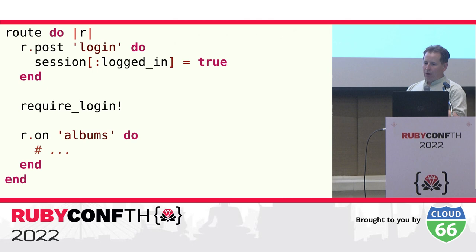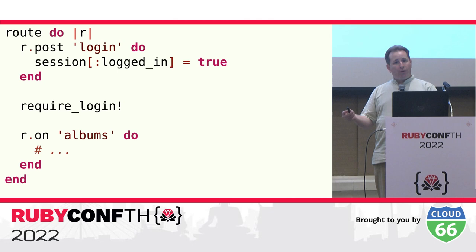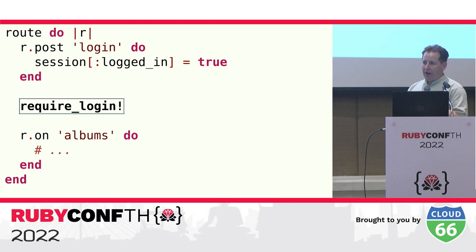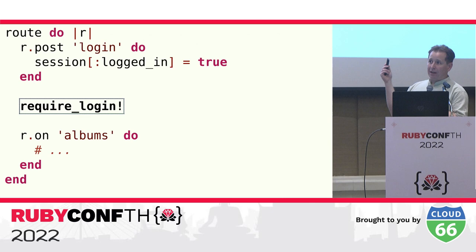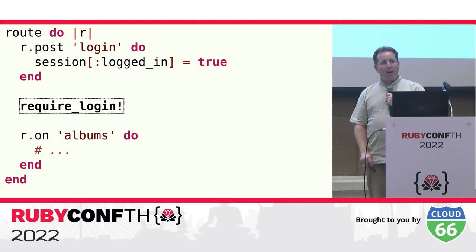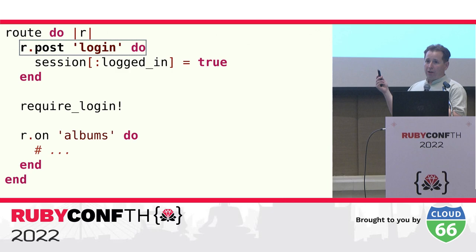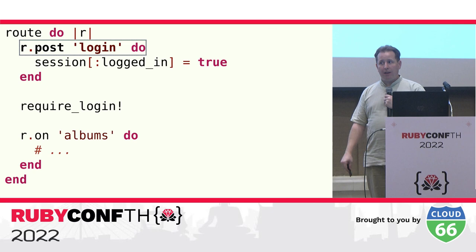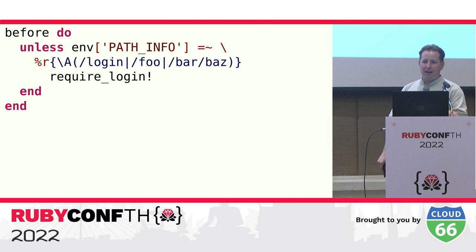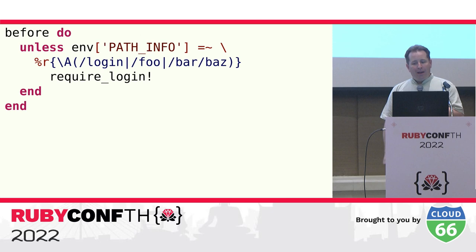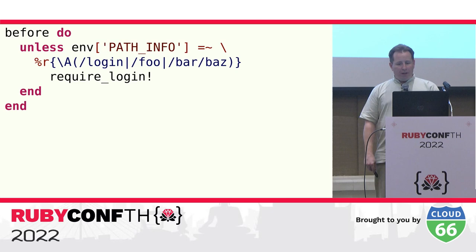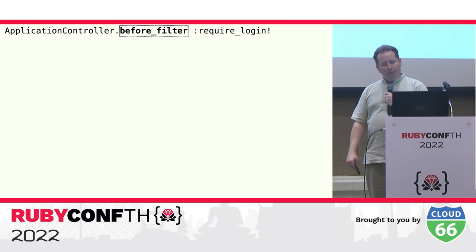Now let's consider more complex cases — for example, running code only for some routes in a branch, not all of them. Since Roda's routing tree is directly executed for each request, you can run arbitrary code at any point during routing. One common use case is access control: if part of your site allows anonymous access and part does not, you can place the anonymous-access routes first, then run the login check, then have the rest of the routes. This is the kind of issue that most sites supporting authentication must deal with, since the login action must be available to unauthenticated users.